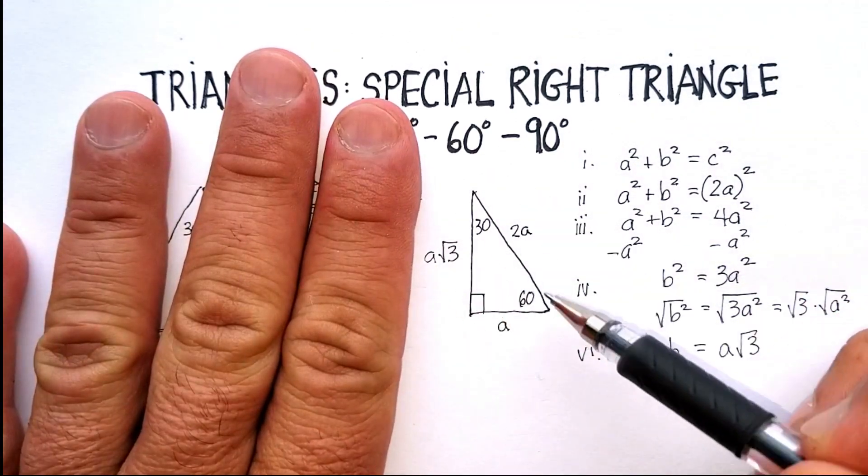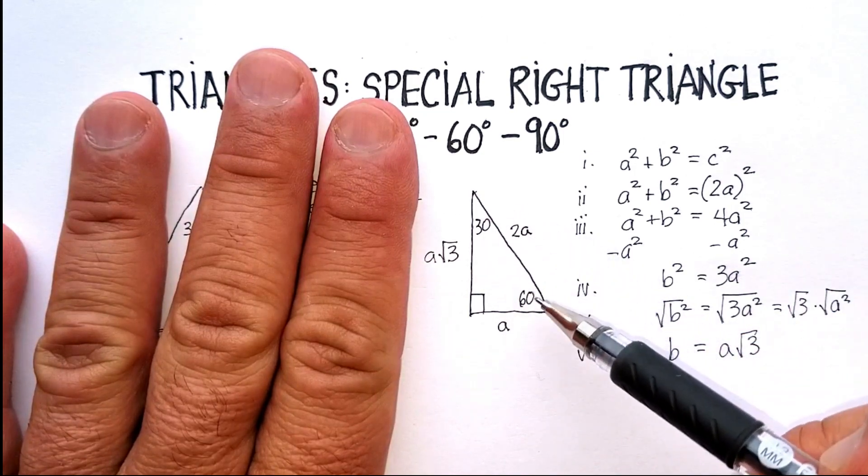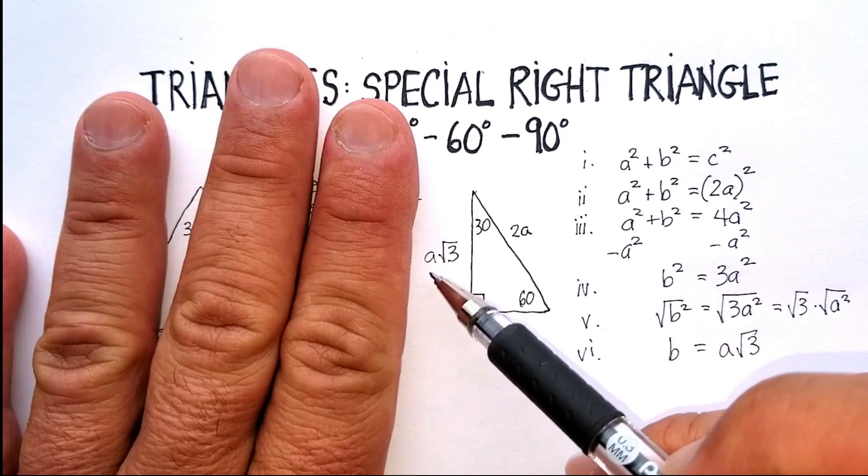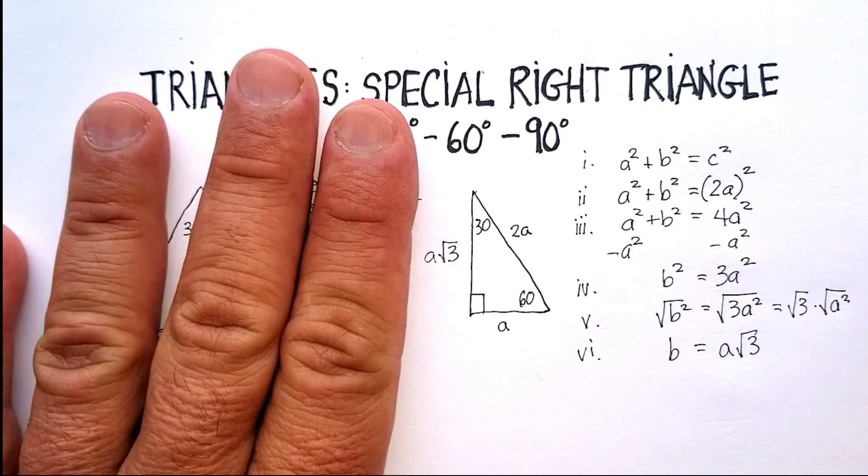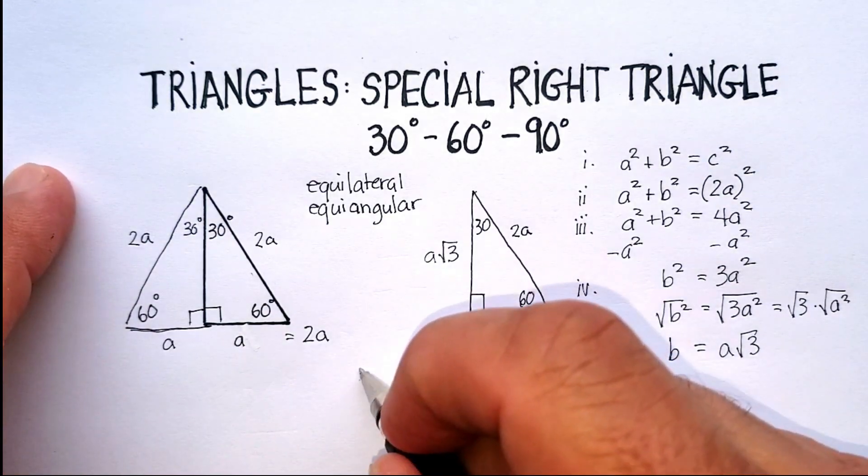In any 30, 60, 90 degree triangle, if this is A, the hypotenuse will always be 2A, and the long leg will be the A times radical 3. Now let's go ahead and show you an example of a problem where that would work.